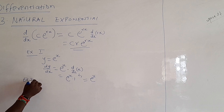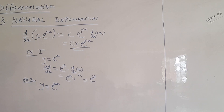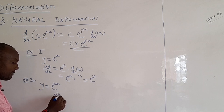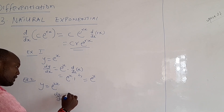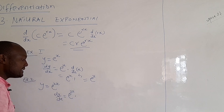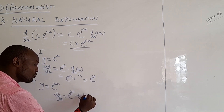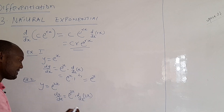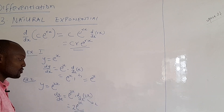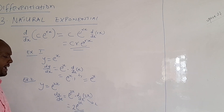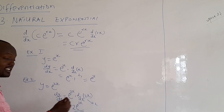Example two: y equals exponential to power 2x. How do we differentiate this? dy/dx — the exponential remains the way it is as e^(2x), then you have to differentiate the power. Our power in this case is 2x, so you must differentiate 2x, and when you differentiate 2x you get 2. So we get e^(2x) times 2, giving us 2e^(2x).